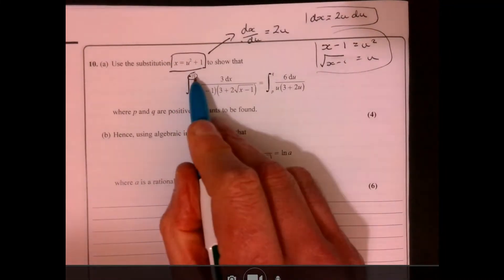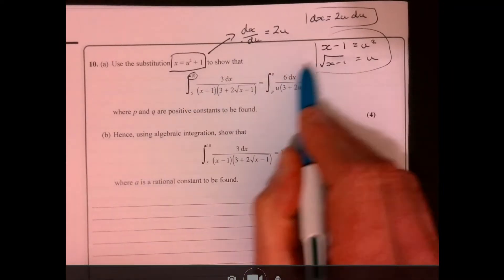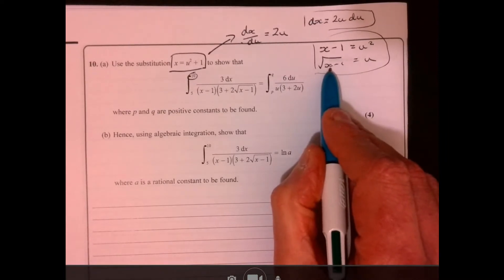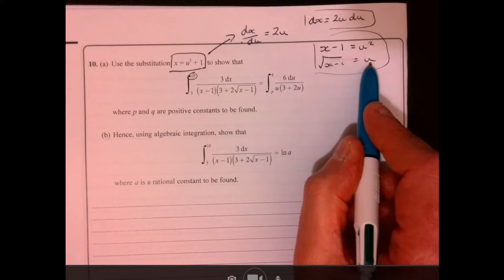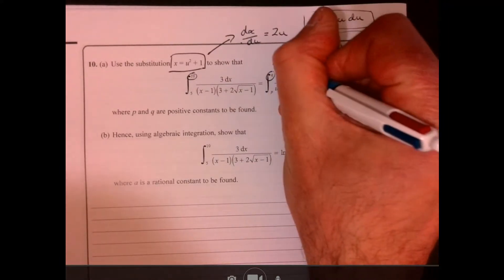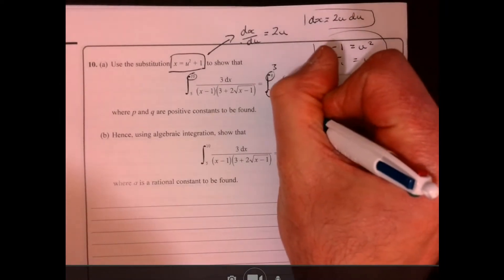So when the x value is 10, then the easiest thing to do is just to come over here. So 10 take away 1 is 9, root is 3. So that tells us that number there is 3. So just like we're calculating our limits.